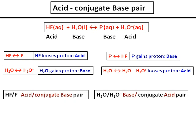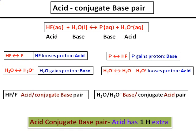How do we remember the acid and base pair? In any acid and conjugate base pair, or the base and conjugate acid pair, the acid will have one hydrogen extra. That's why HF is the acid — it has one hydrogen extra. In the H2O and H3O plus pair, H3O plus is the conjugate acid for water because it has one hydrogen extra.